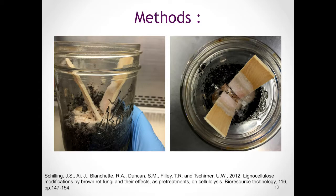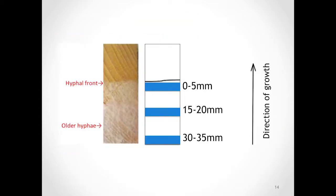This creates a fungal lawn on which we will then place our wood wafers. In this way, we are forcing the fungus to grow up vertically and unidirectionally along the grain of the wood. We will keep the setup going for about three weeks and then harvest the wafers. The wafers will look something like this, and we will measure out where the hyphal front on top of the wafer — where we find the youngest mycelia — are located.